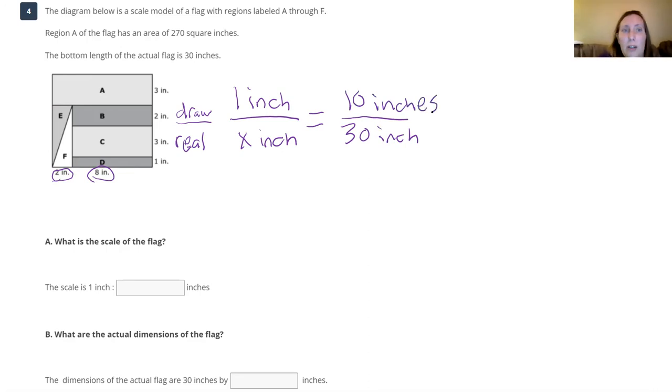Let's just use some cross products. So one times 30 is 30, 30 equals 10 times x. I can divide by 10 and divide by 10, and 30 divided by 10 is three.